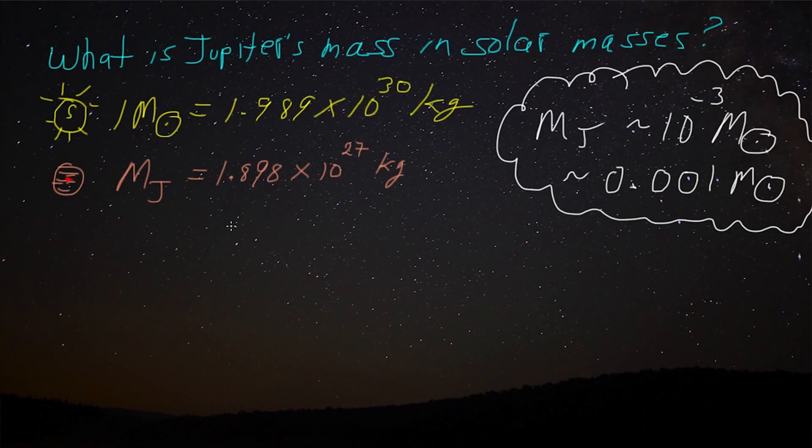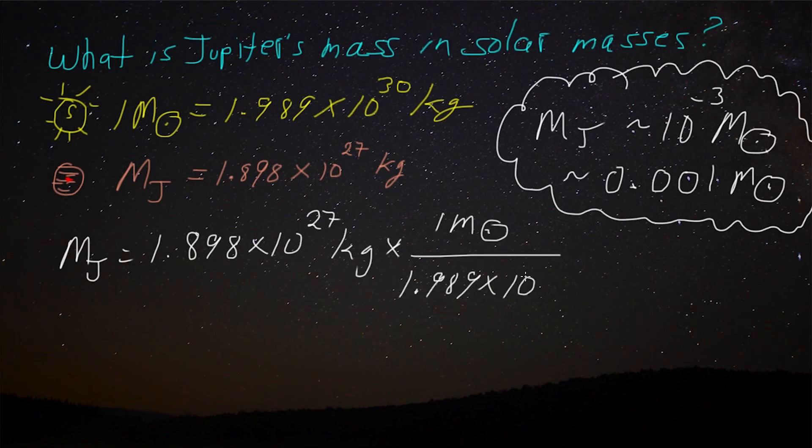So the mass of Jupiter is going to be equal to, and we want our answer in solar masses. So to do that, we're going to say 1.898 times 10 to the 27 kg times 1 solar mass over 1.989 times 10 to the 30 kg. Okay, good news. Our answer is going to be in solar masses because the kilograms cancel. Hooray!